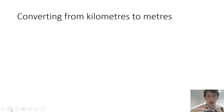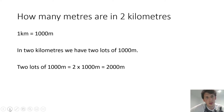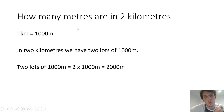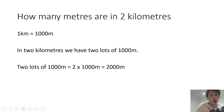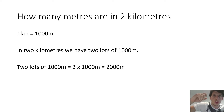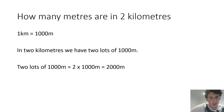Sometimes we may want to convert from kilometers to meters — to find out how many meters there are in a certain amount of kilometers. Here's an example: how many meters are there in two kilometers? We know one kilometer is a thousand meters. Here we have two kilometers, which means we've got two lots of 1,000 meters. Two times 1,000 meters equals 2,000 meters. So two kilometers is the same as 2,000 meters.